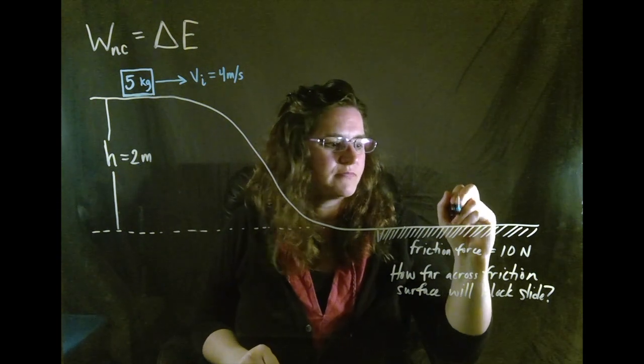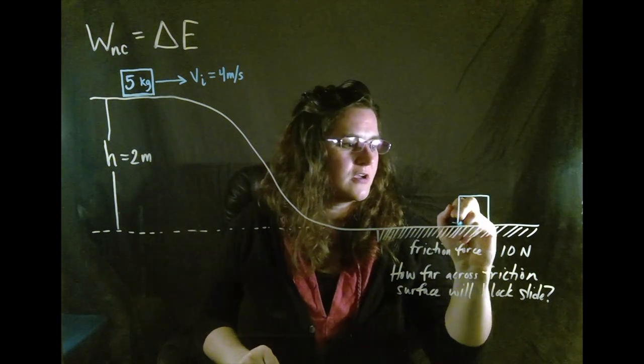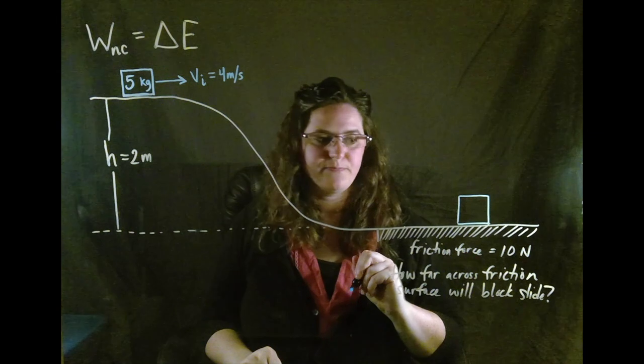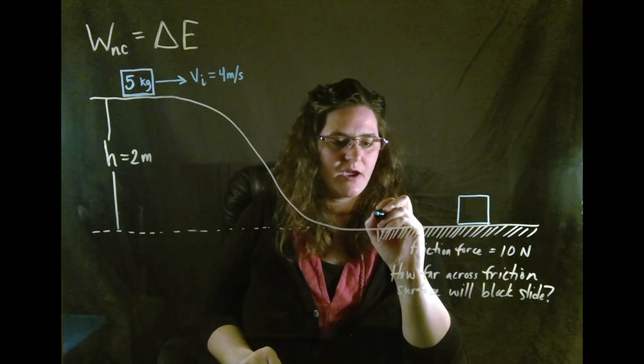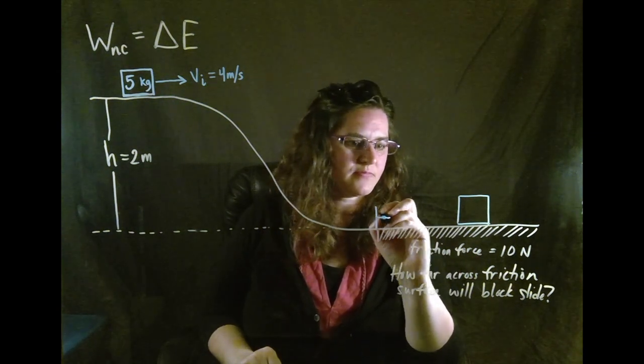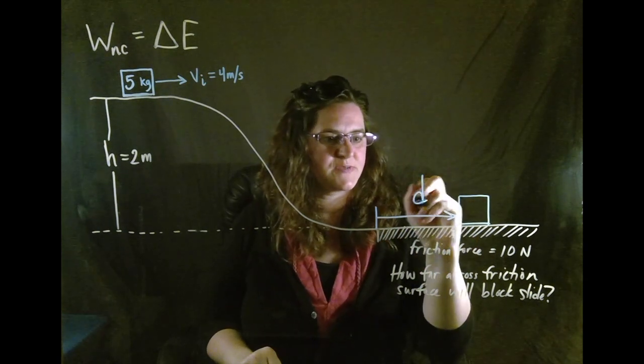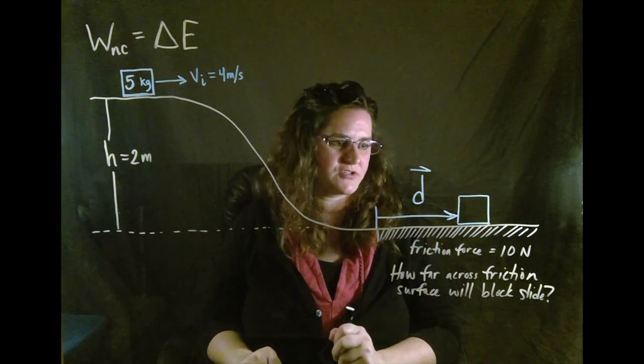Okay, so the block ends up, let's just draw the block here. Let's say that the block ends up right there. And so we're being asked to find this distance, this displacement. We're going to call that a vector d.